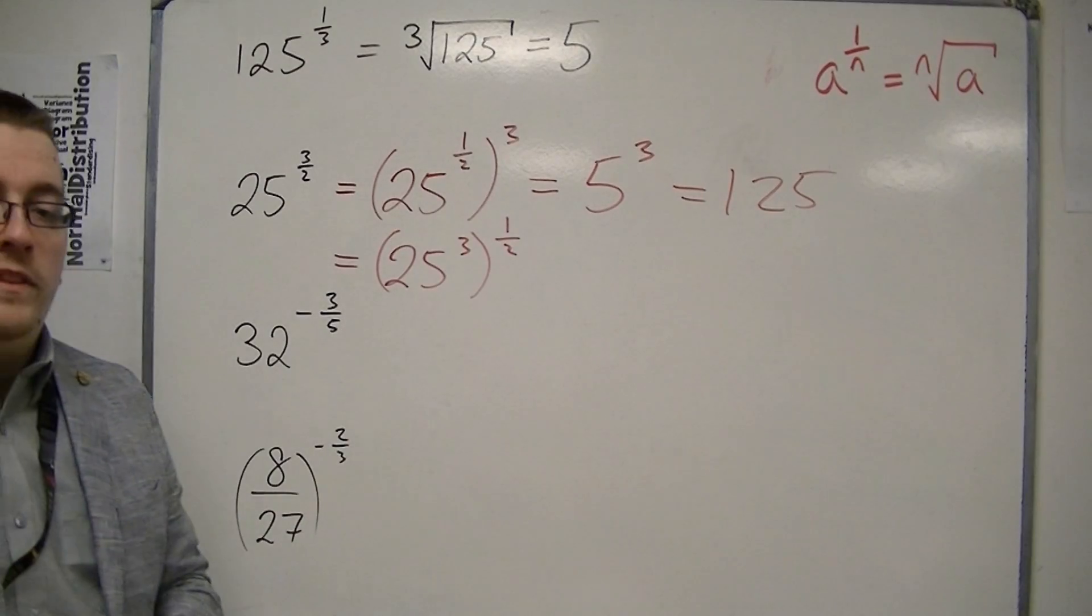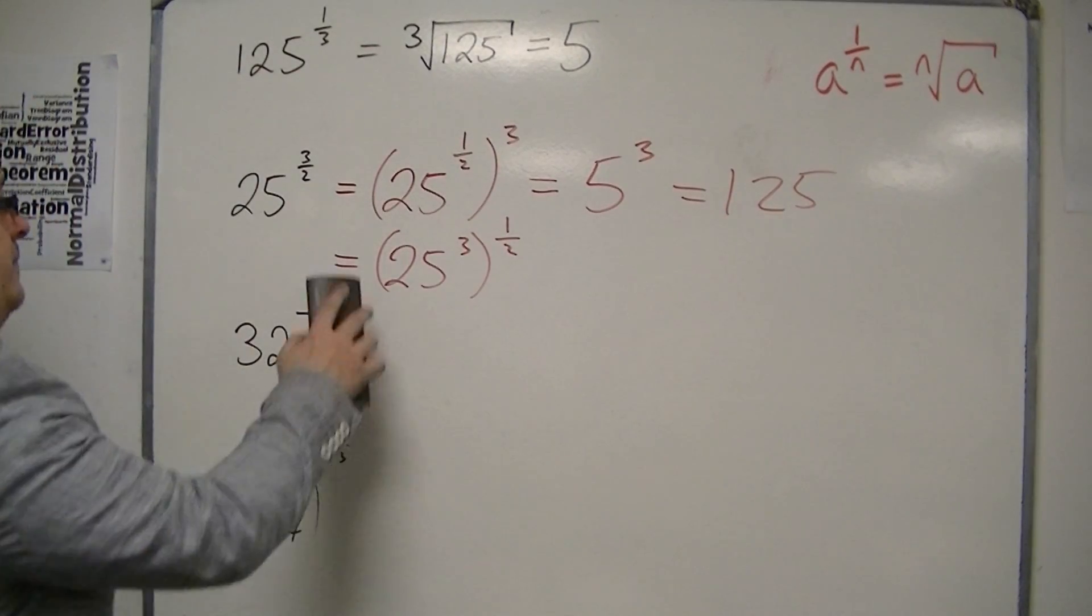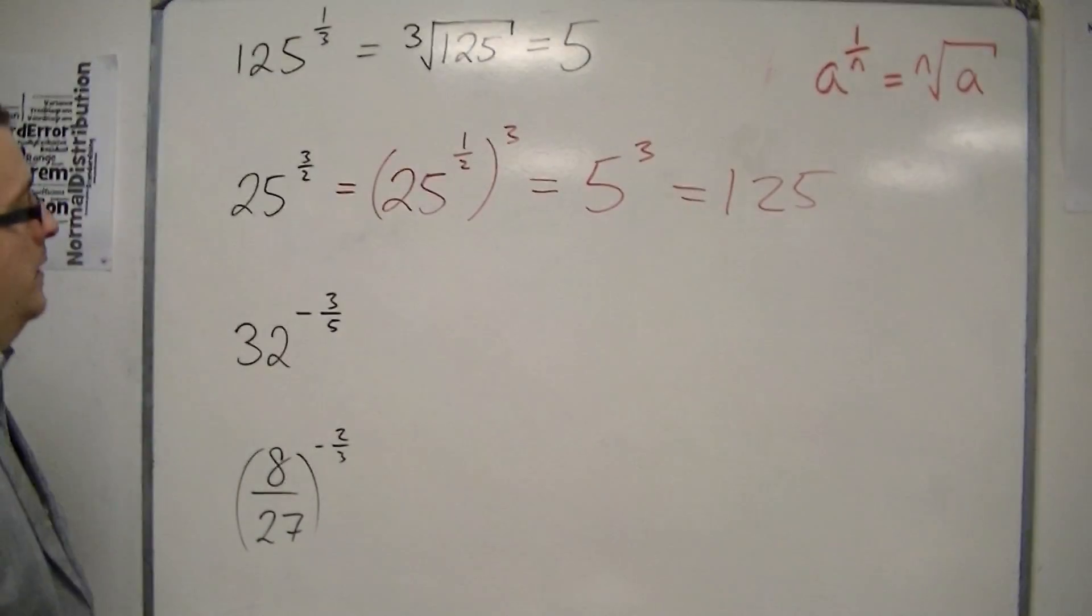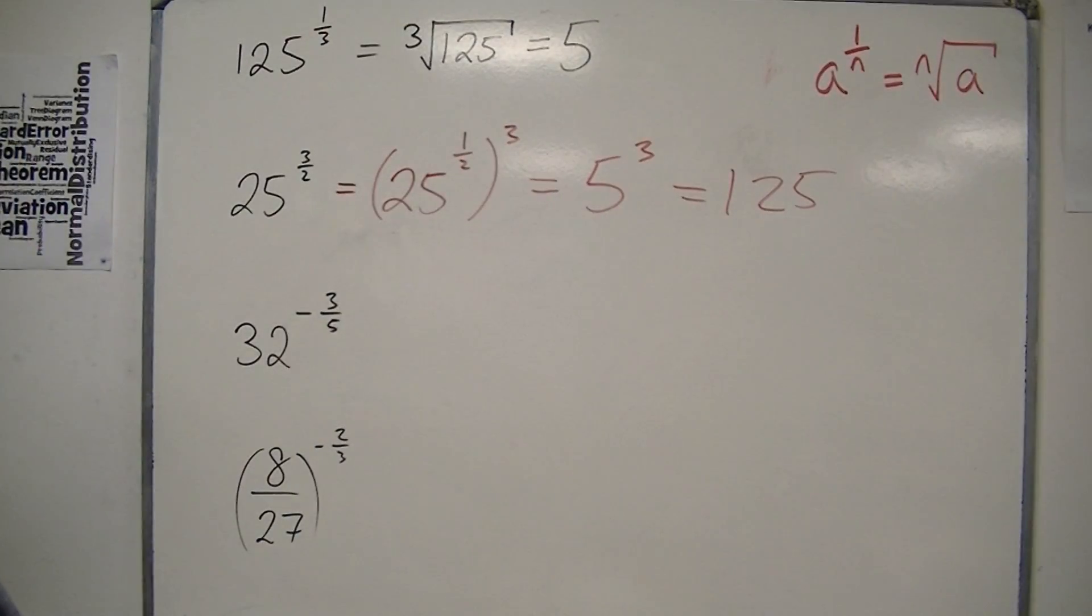You can go about it the other way; it's just a little bit more tricky. Both are equivalent, however. Now we're looking at this one, 32 to the minus 3 fifths.